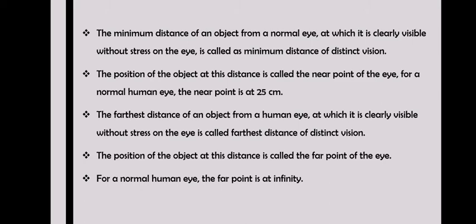The farthest distance of an object from a human eye at which it is clearly visible without stress is called the farthest distance of distinct vision. This becomes the far point of the eye. For a normal human eye, the far point is at infinity.